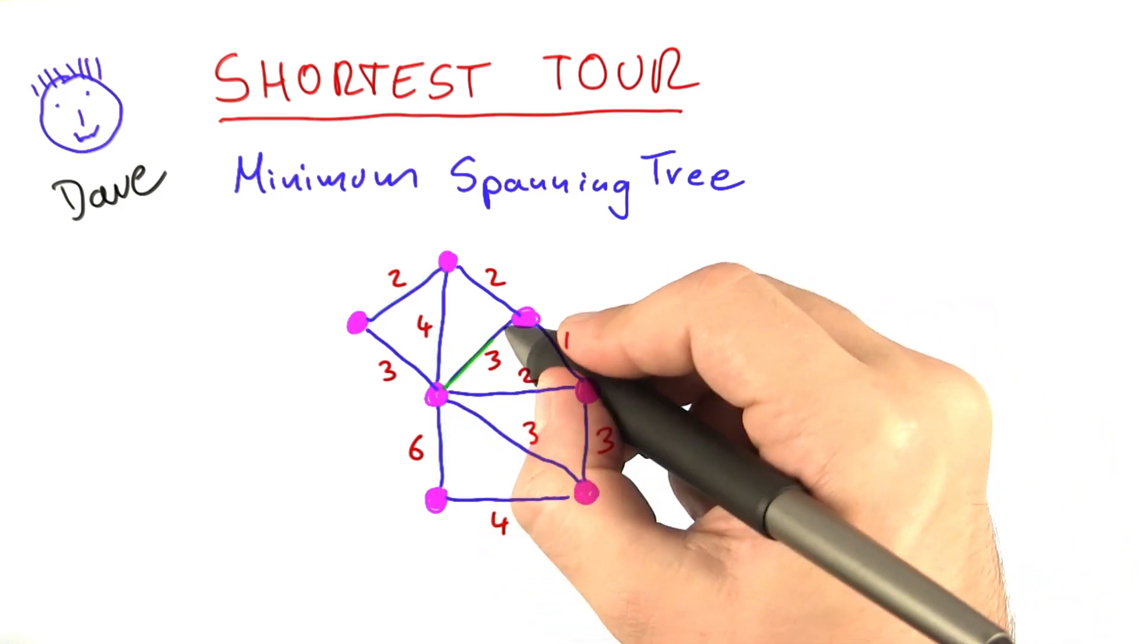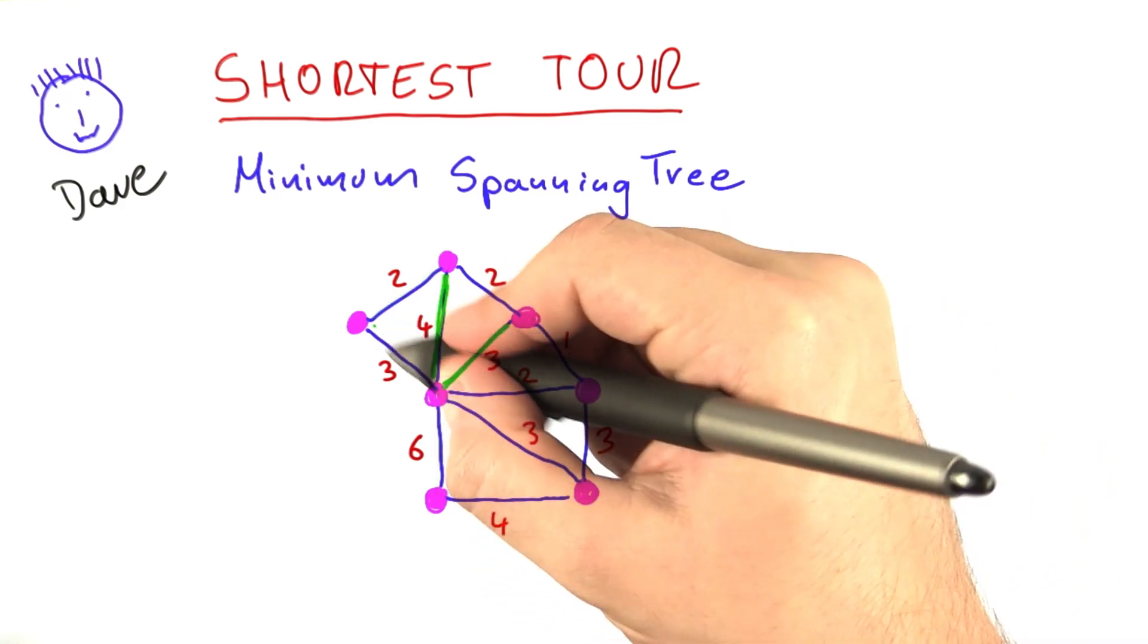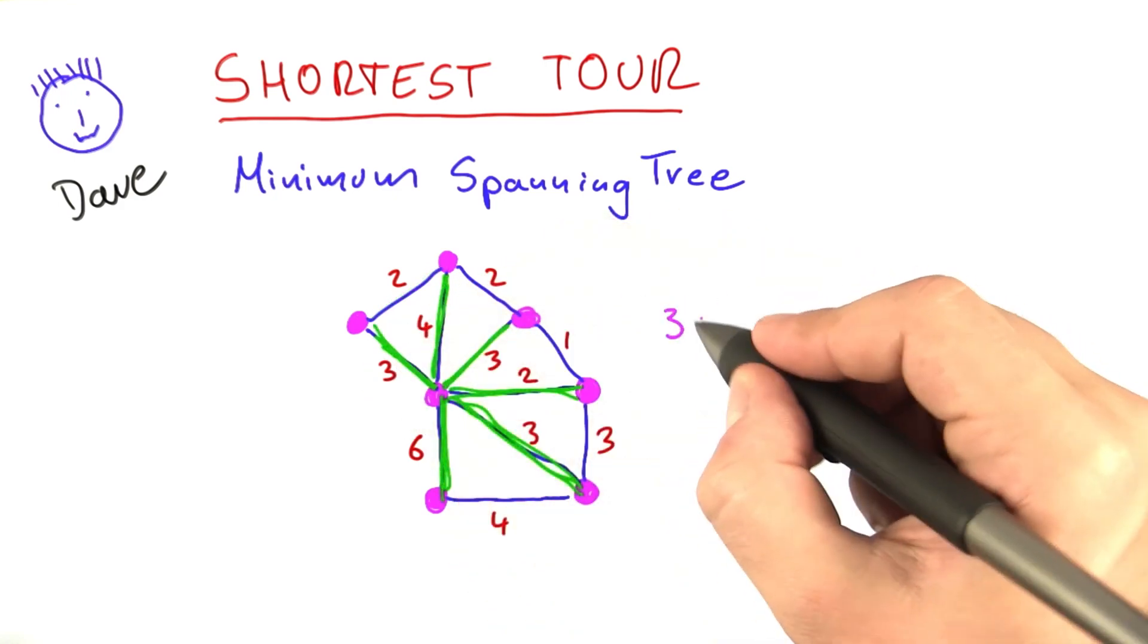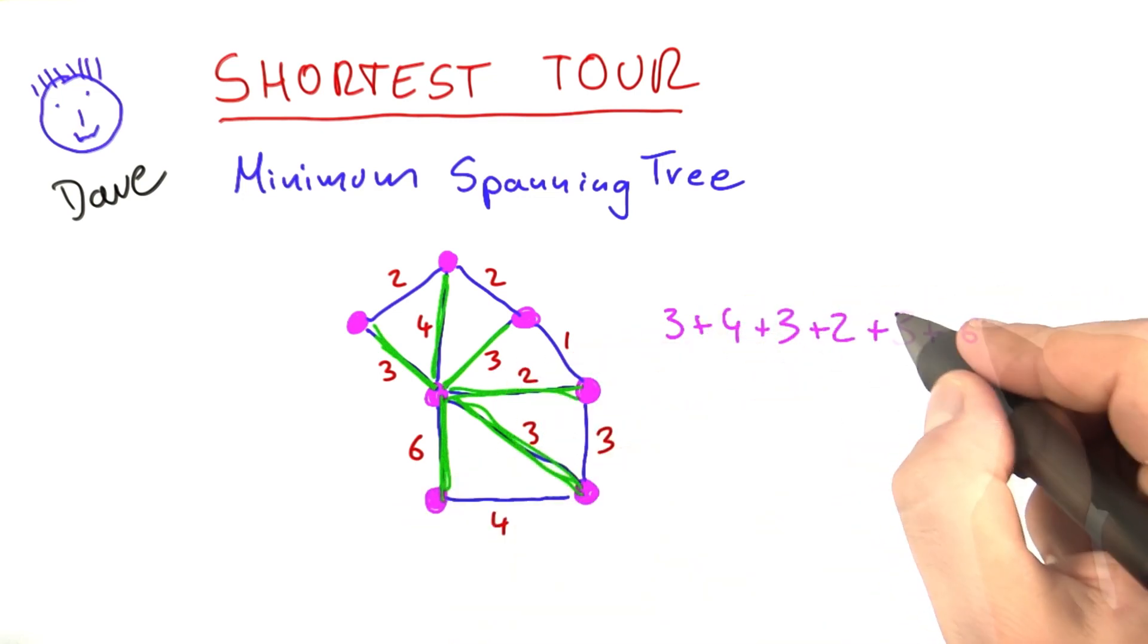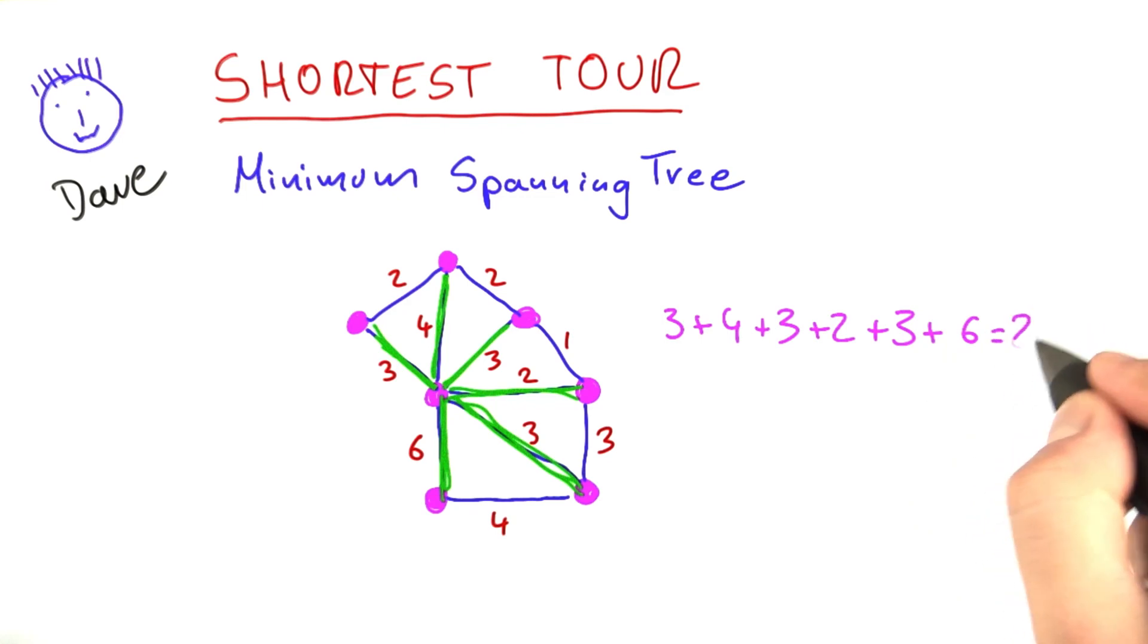Now if you choose another spanning tree, for example this one here, that spanning tree will have a weight of 3 plus 4 plus 3 plus 2 plus 3 plus 6, which is a total weight of 21.